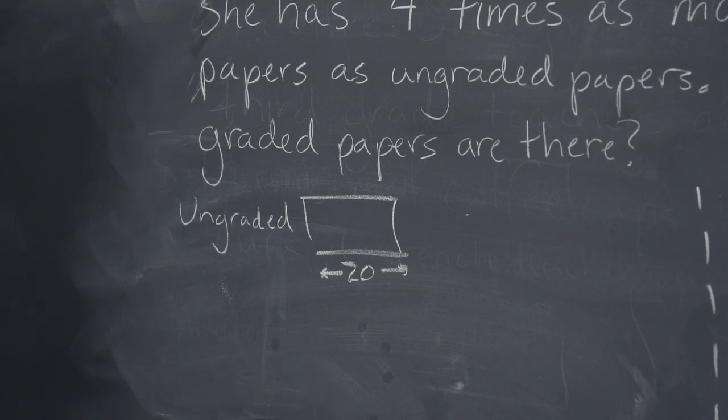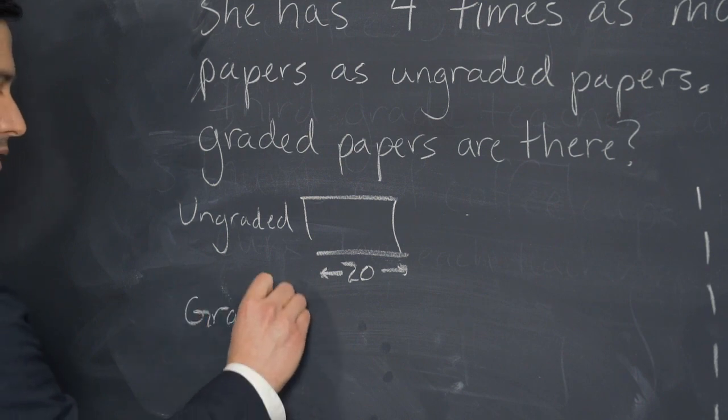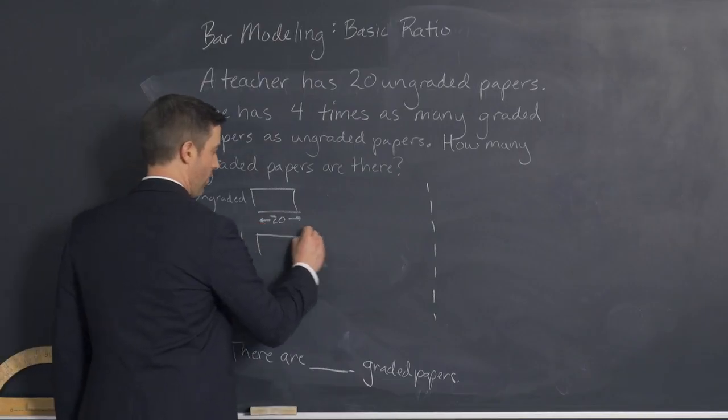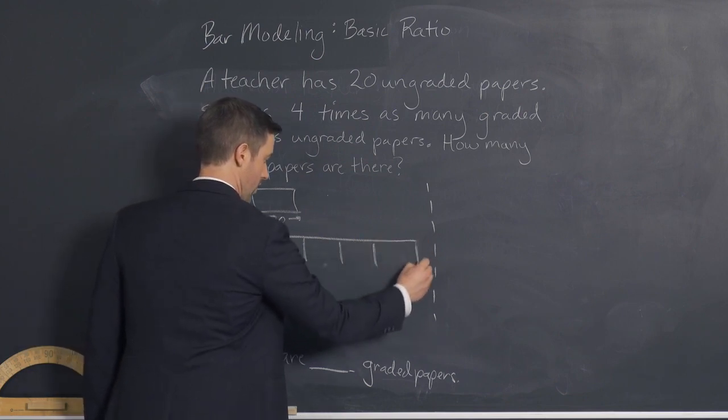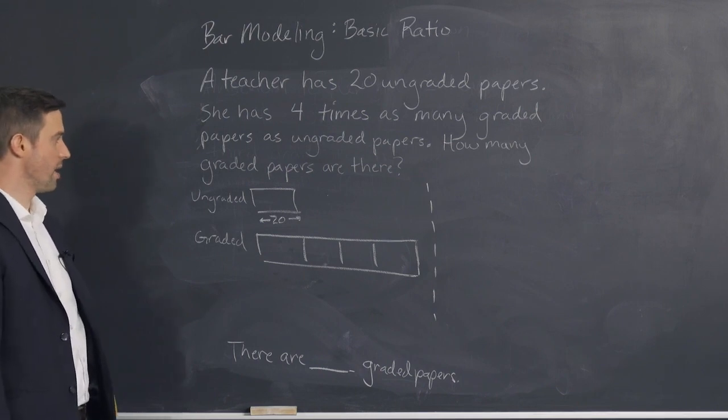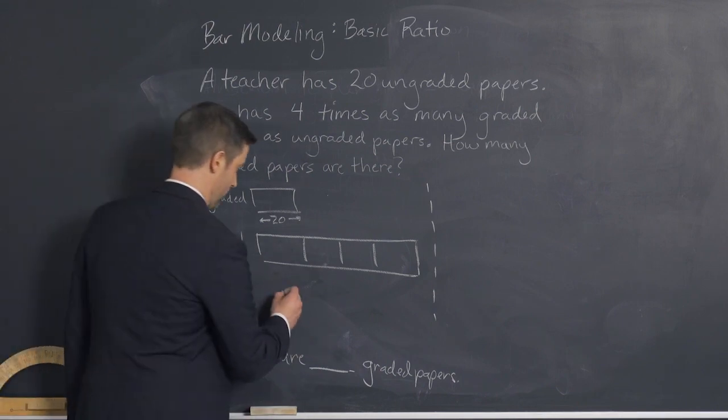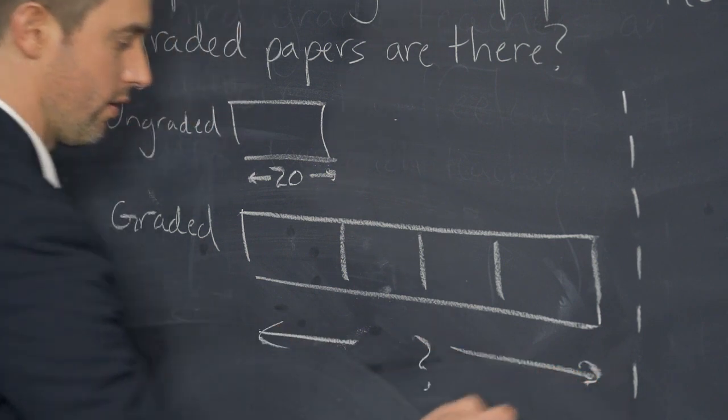She has four times as many graded papers. So we have graded. And four times as many means that I'm going to have four of these. How many graded papers are there? So we are looking for the total number of graded papers.